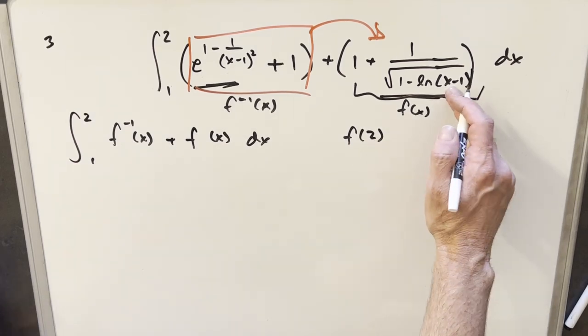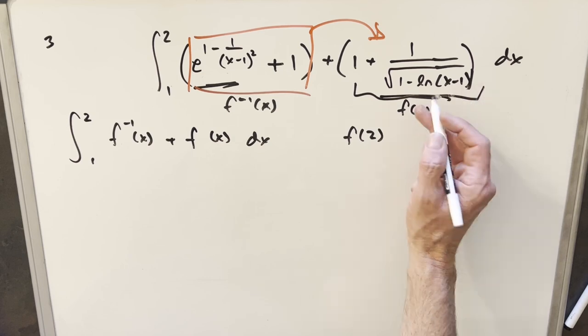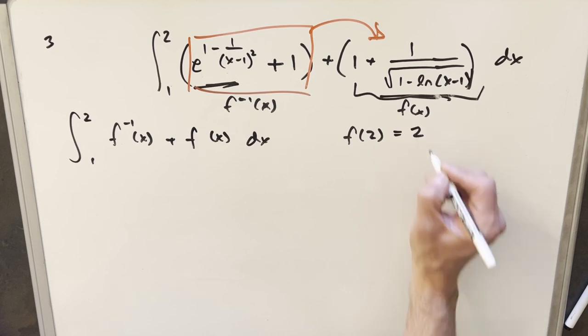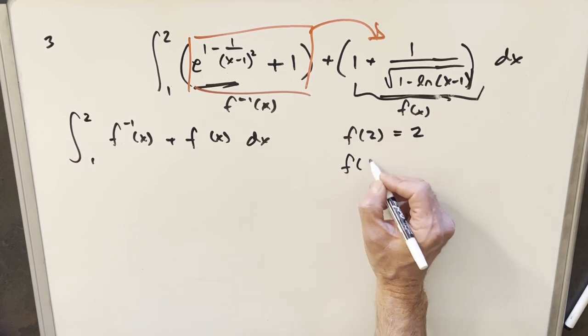When I plug a 2 in here, that's going to give me natural log of 1, which is 0. So this is going to be over here is just going to be 1. We're going to have 1 plus 1. This value is going to be 2.